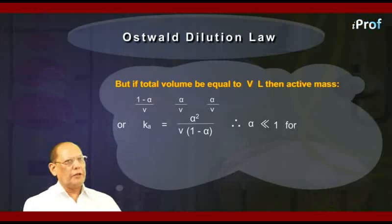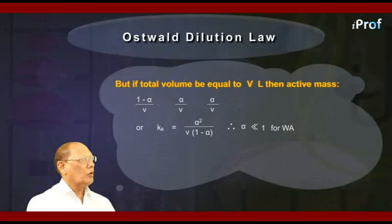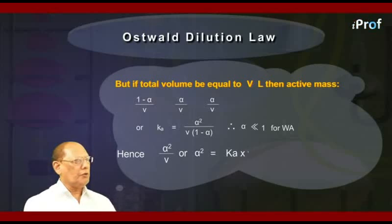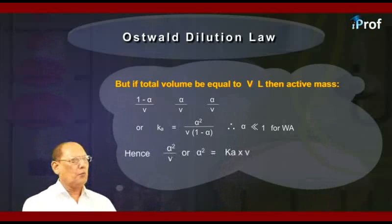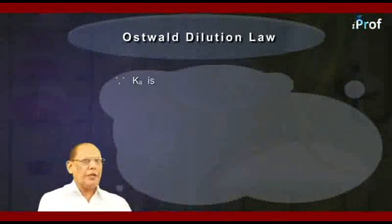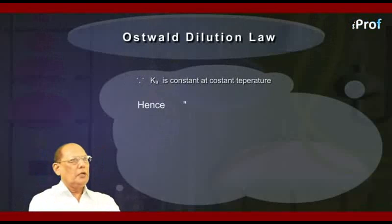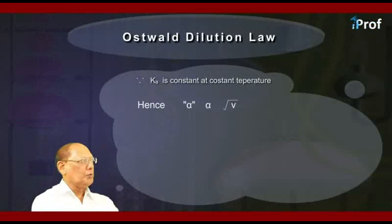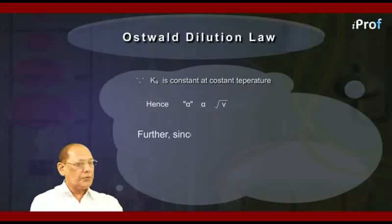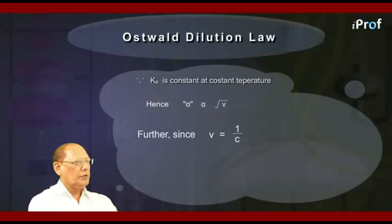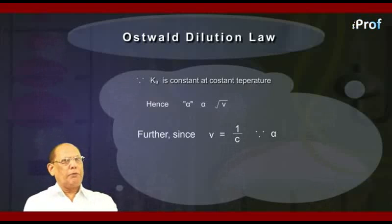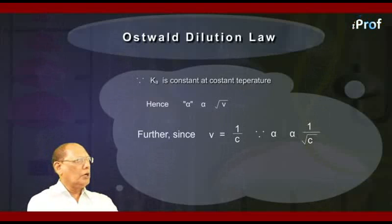Therefore, applying the law of mass action, we can write: Kₐ = (alpha/V × alpha/V) / ((1 − alpha)/V) = alpha² / (V(1 − alpha)). Since alpha is much less than 1 for weak electrolytes (weak acid or weak base), we can say Kₐ ≈ alpha²/V, or alpha² = Kₐ × V. Since Kₐ is constant at constant temperature, we conclude that alpha is proportional to √V. Since V = 1/C, alpha is proportional to 1/√C.